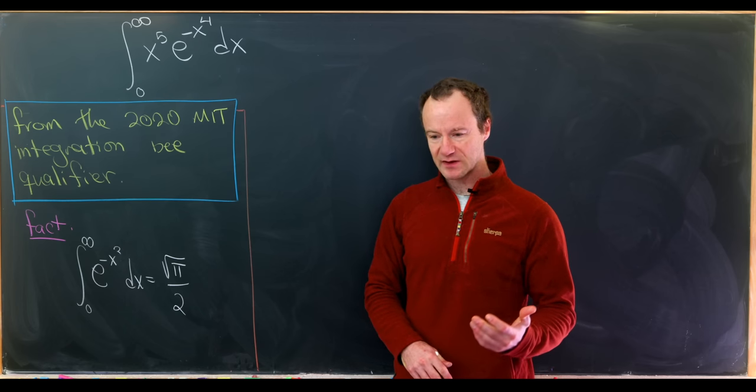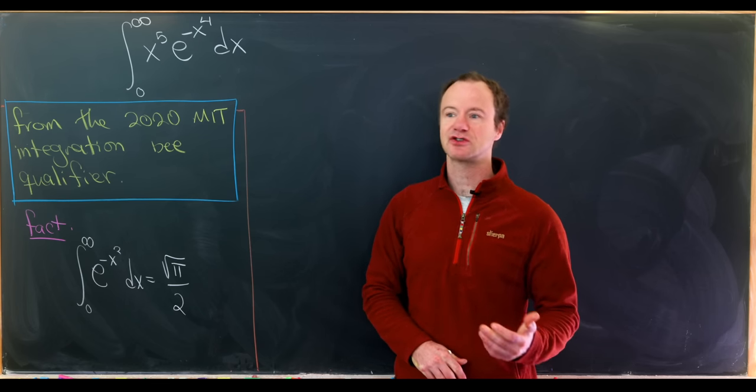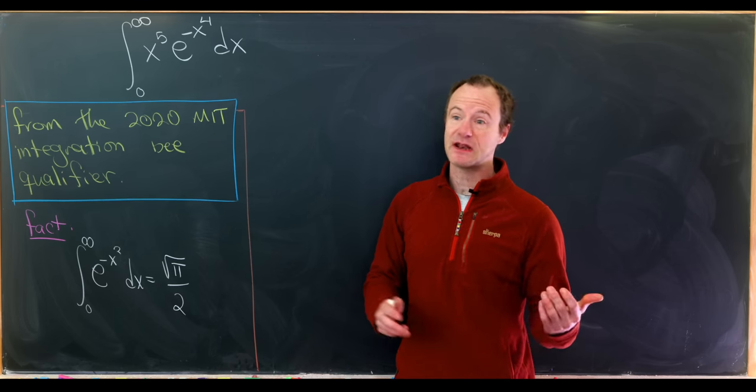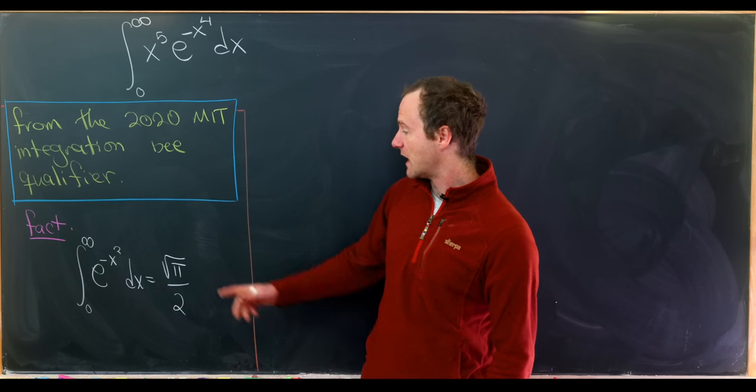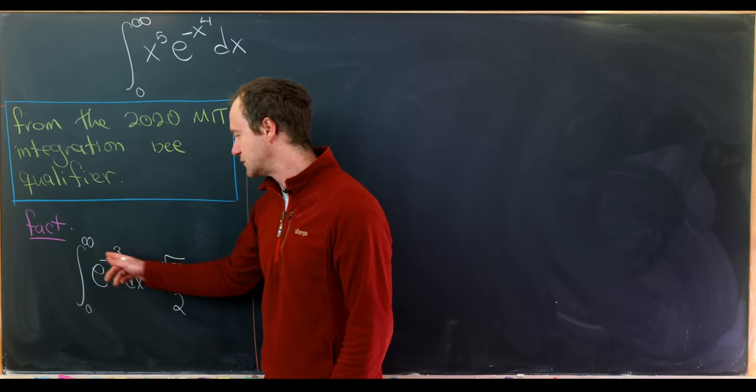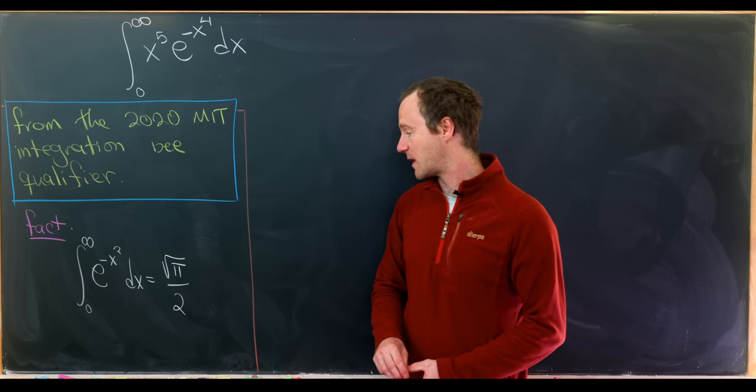So instead of that, we'd like to think to a famous integral that is exponential, has a non-elementary anti-derivative, but it has a nice closed form. And that is the following integral. We have the integral from 0 to infinity of e to the minus x squared dx is the square root of pi over 2.